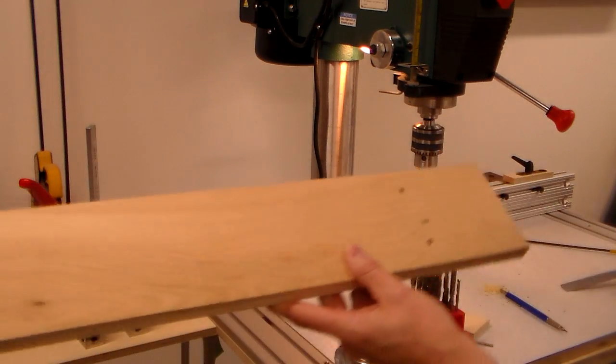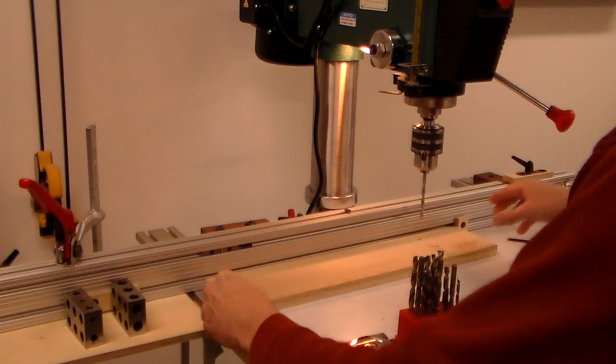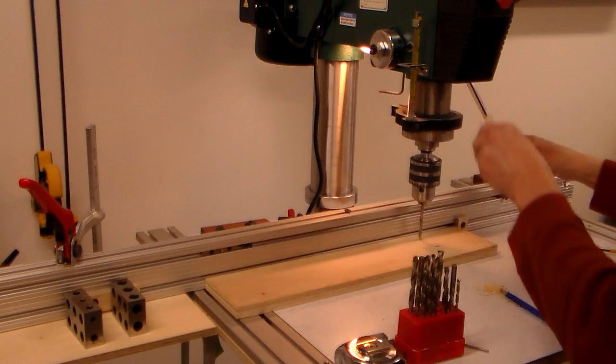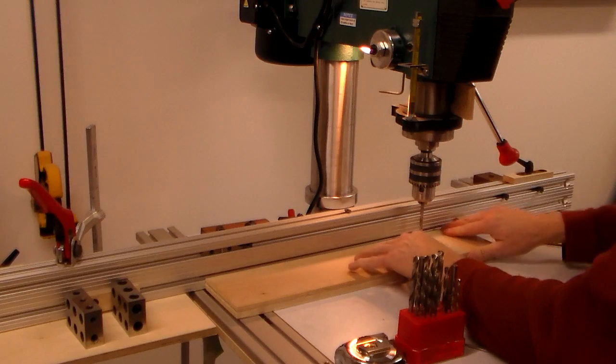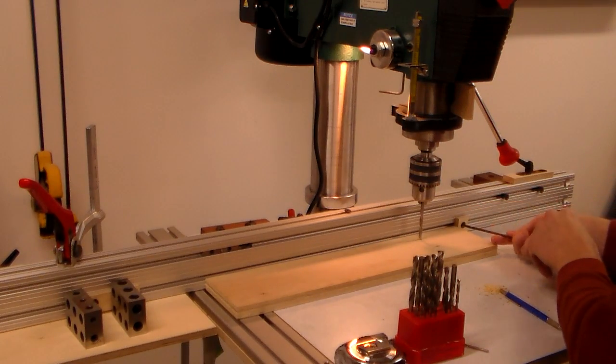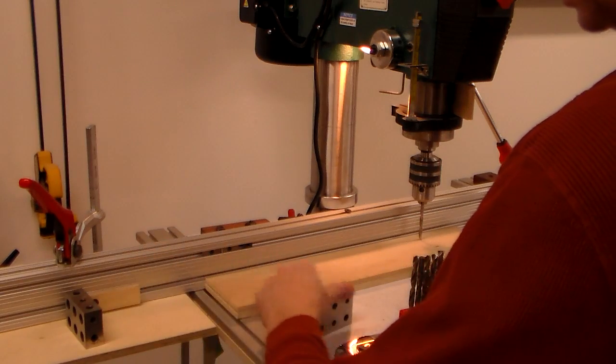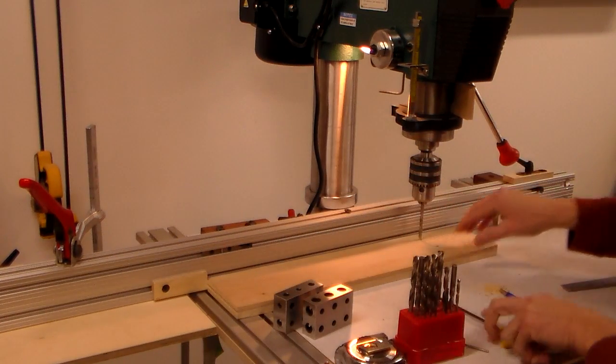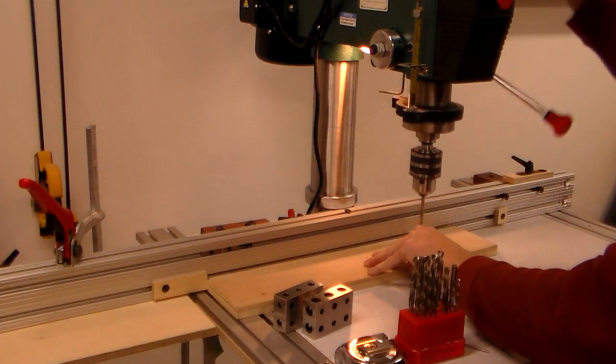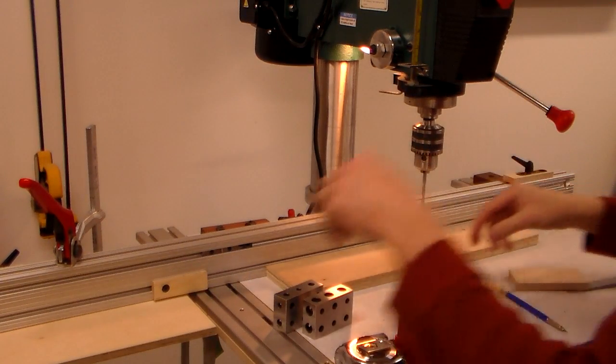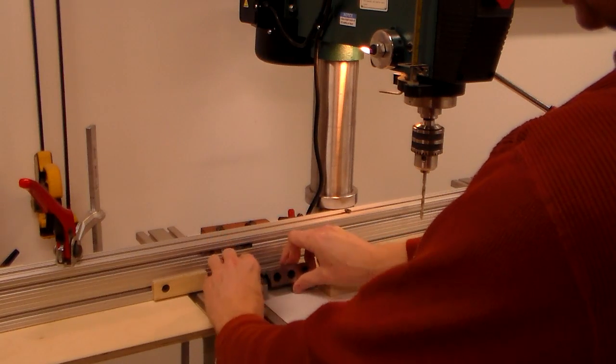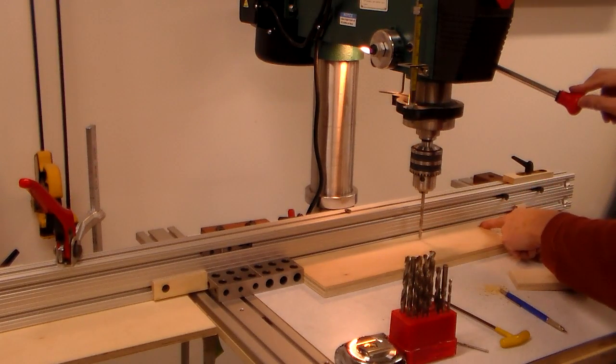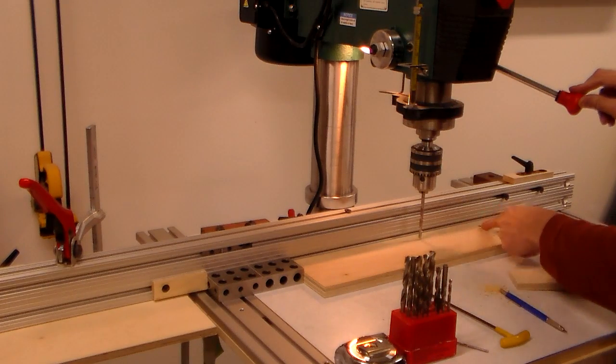So now if I wanted to go from here and start indexing over again, I would use this as my reference point again. I block my quill like that, loosen this up. Okay, there's zero. I want to index over six inches. There you go. Now I'm going to be exactly six inches from this hole location, center to center to this one.